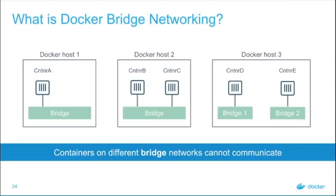Containers on different bridge networks cannot speak to one another. Container A on Docker host one is connected to its own bridge and has no networking access to other containers. On host two, containers B and C are on the same bridge so they can speak to one another. On Docker host three, we've created a bridge for each container, so even though they're inside the same host, they're on different bridge networks and can't speak to one another in that current networking design. These are key areas you need to be aware of if you're using bridge networking for development and testing or for scoping out your application architecture.